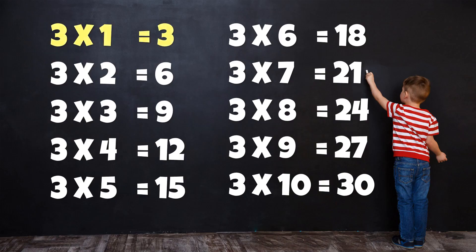Table of 3: 3×1=3, 3×2=6, 3×3=9, 3×4=12, 3×5=15, 3×6=18, 3×7=21, 3×8=24, 3×9=27, 3×10=30.